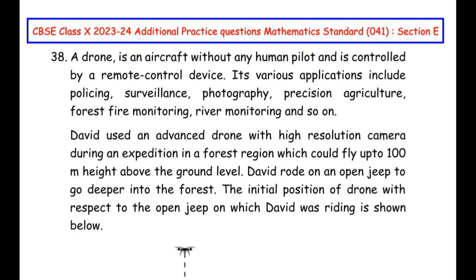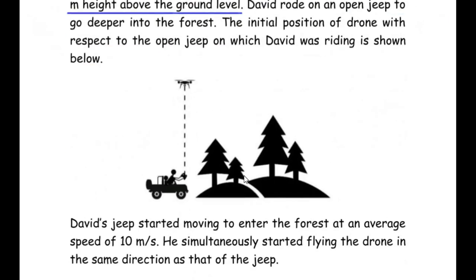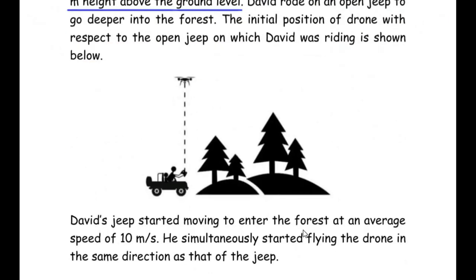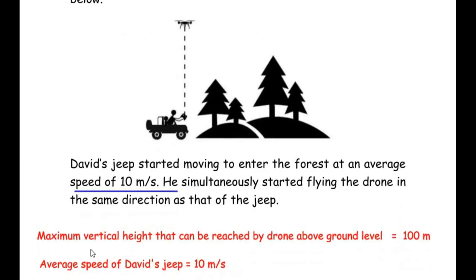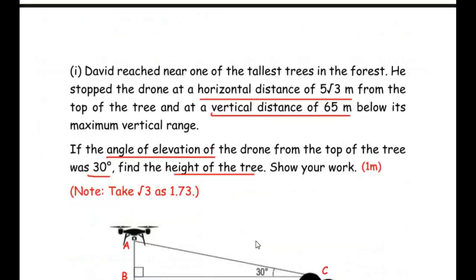Let us understand the entire question first. David is flying his aircraft and exploring the forest. The piece of information given is the drone can fly up to 100 meters height above the ground level — that is the maximum height it can reach. The second piece of information is David's jeep was moving at an average speed of 10 meters per second. So: maximum vertical height that can be reached by the drone above ground level is 100, and average speed of David's jeep is 10 meters per second.